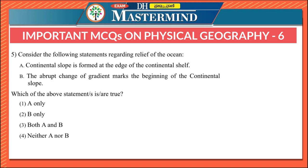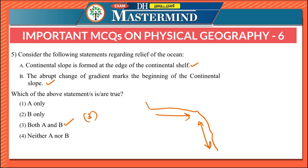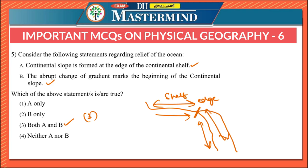The fifth question considers statements regarding the continental slope. Continental slope is formed at the edge of the continental shelf, and the abrupt change of gradient marks the beginning of the continental slope. Both statements are correct, so the right option is both A and B.